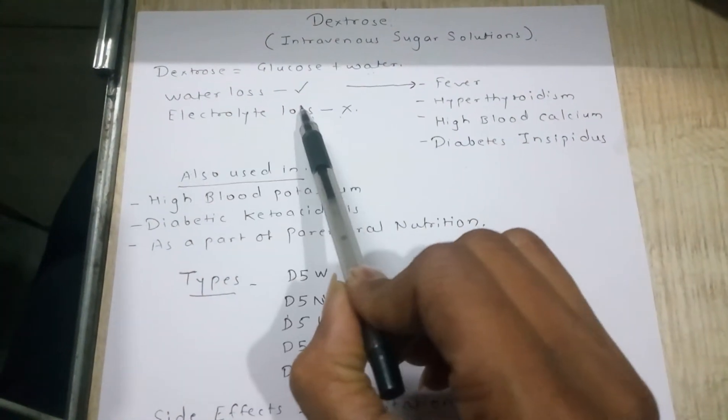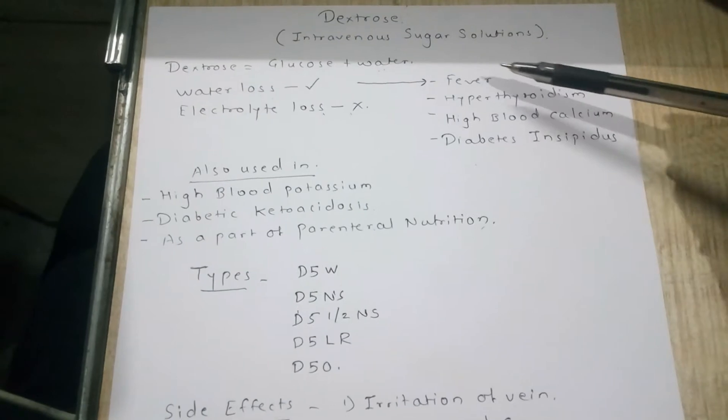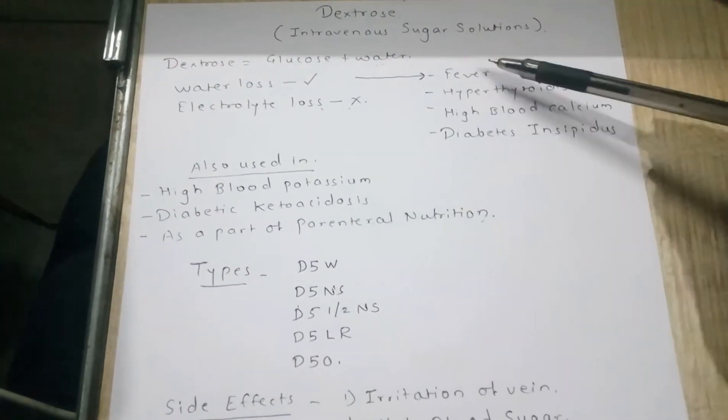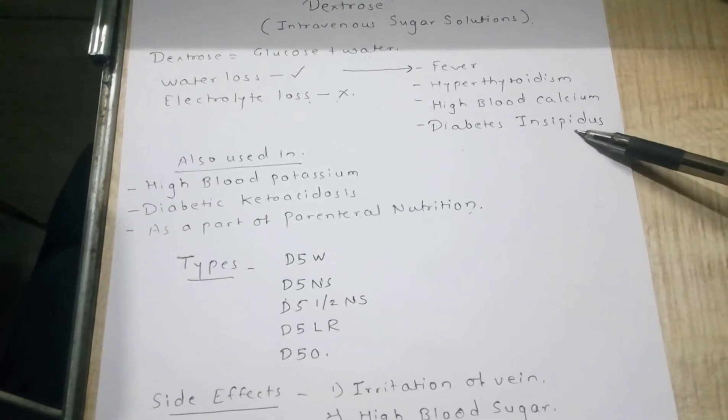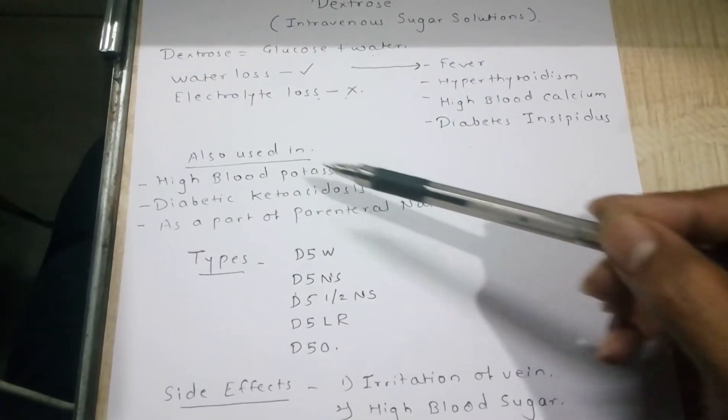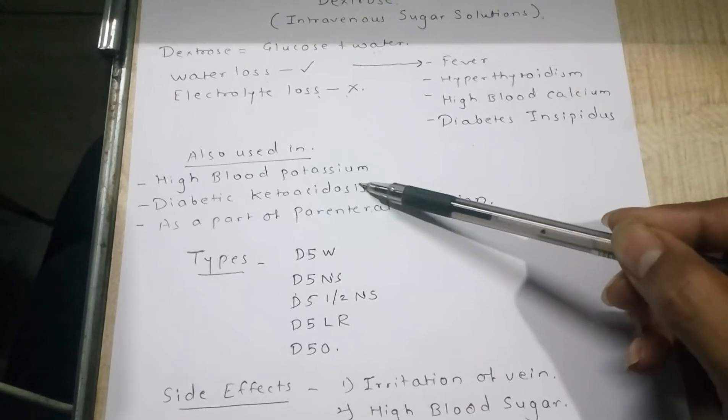Water loss is observed in these conditions: fever, hyperthyroidism, high blood calcium, diabetes insipidus, high blood potassium, and diabetic ketoacidosis.